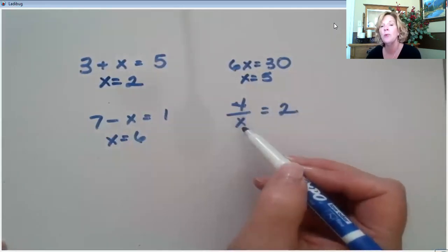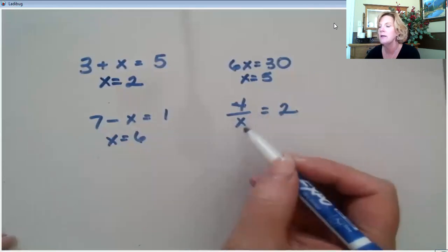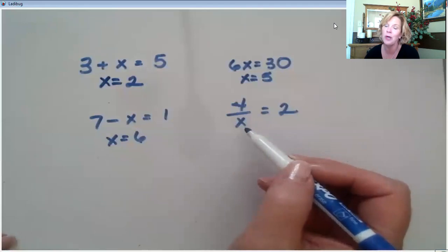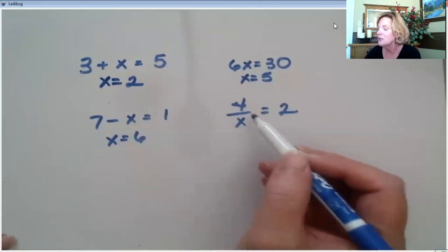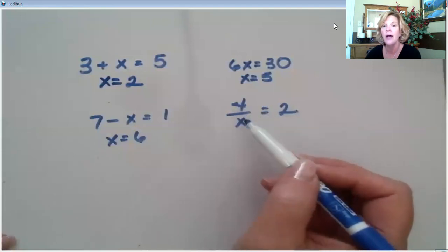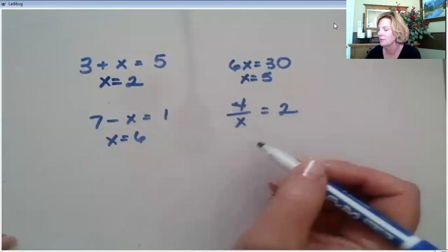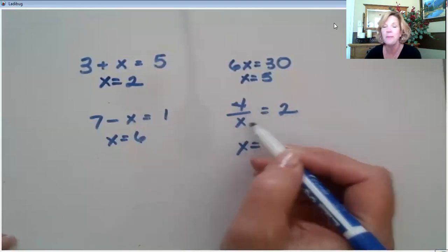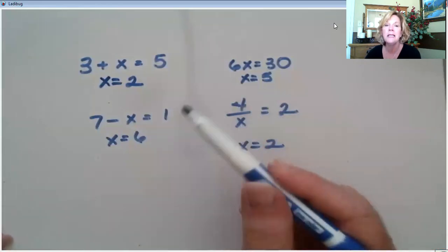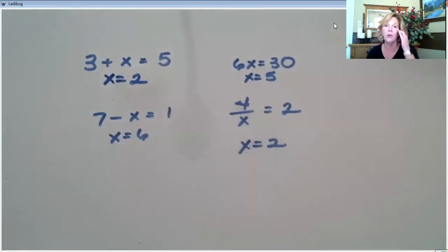This is a way of showing division. So, remember we've shown division in multiple ways, but every fraction is a division problem. Yes, you know this. So, this is 4 divided by x equals 2. 4 divided by what number is going to give us 2? You know. 4 divided by 2 is 2. So, keep this in mind as we write our own equations.